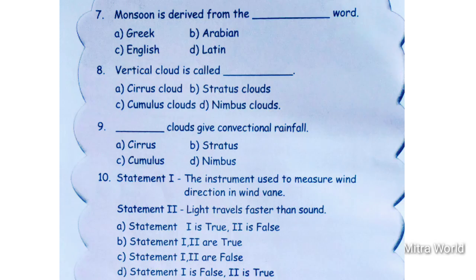Next, question number seven: monsoon is derived from the dash word. Options: Greek, Arabian, English, Latin. The answer is Arabian — monsoon is derived from the Arabian word.